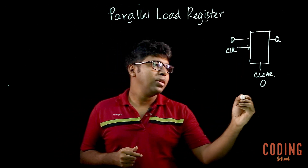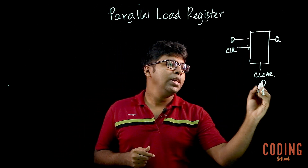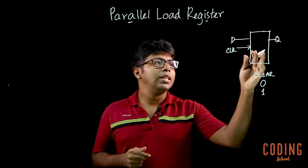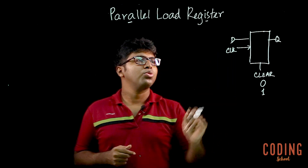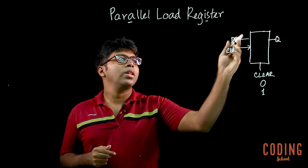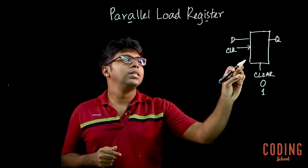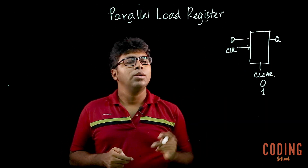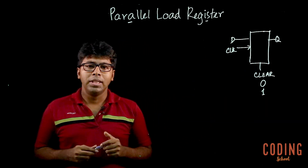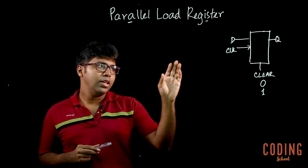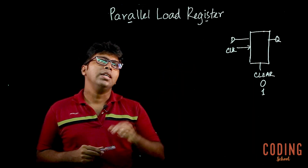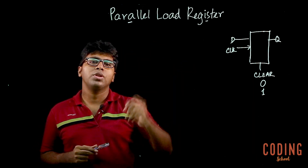When we have clear one, we have set the flip-flop data. So, if we have D equal to 0, then we have a clock pulse, then D to Z, then Q is set. Now, if we have a D flip-flop, we can use a parallel load register.